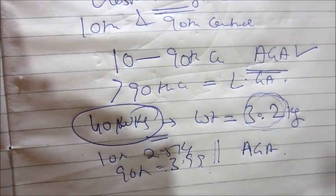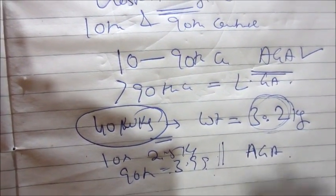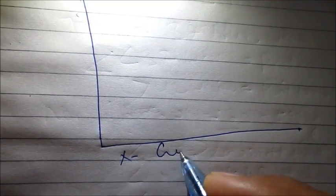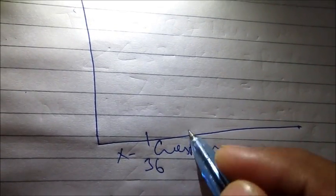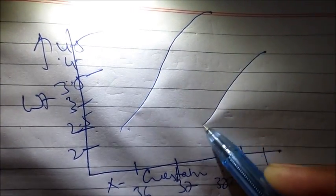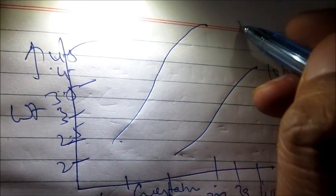You should know the gestational age and the 10th and 90th centile values. A graph is typically used for this. On the x-axis, gestational age is plotted — for example, 36, 37, 38, 39, and 40 weeks. On the y-axis, the weight of the baby is plotted — for example, 2, 2.5, 3, 3.5, 4, and 4.5 kg. Two lines are drawn: the upper line is for the 90th centile and the lower line is for the 10th centile.